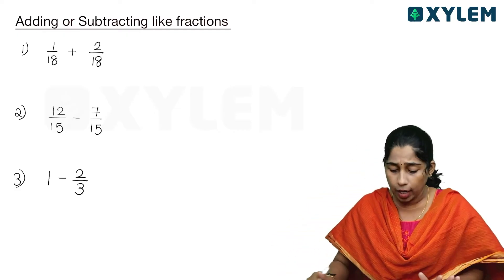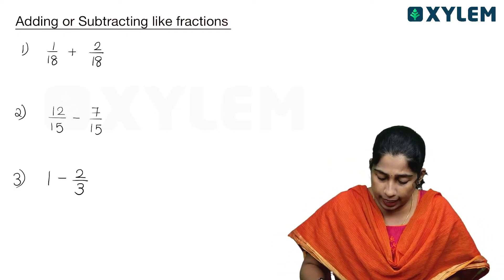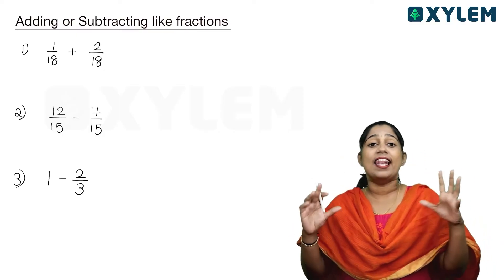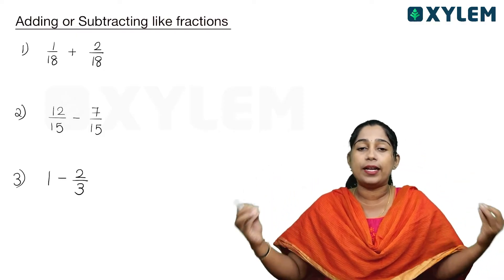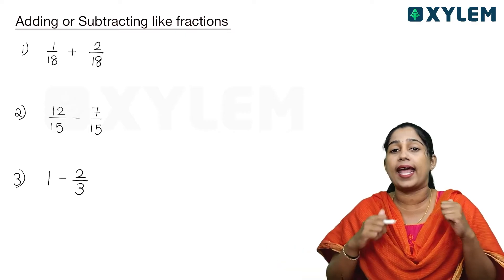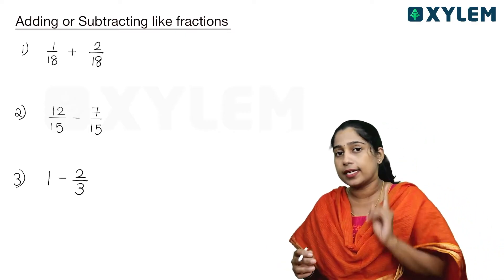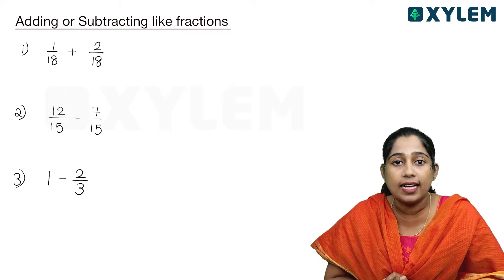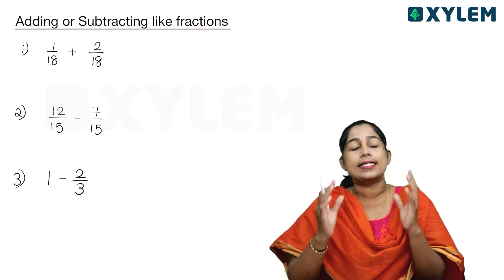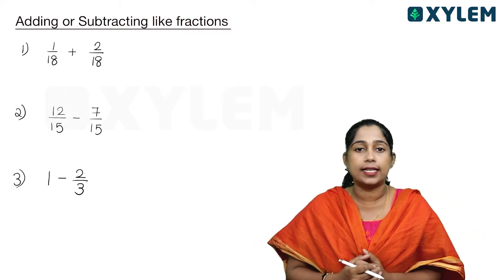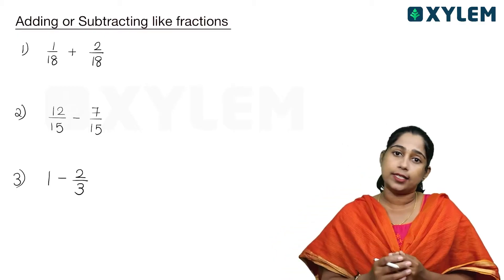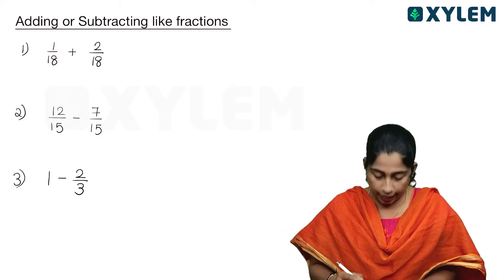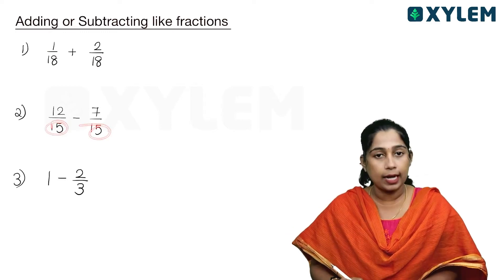So we can say: how do we do like fractions? Like fractions have the same denominator. How do we add fractions? Like fractions are the same — they share the same denominator. Look, here is the denominator — the denominator is the same.